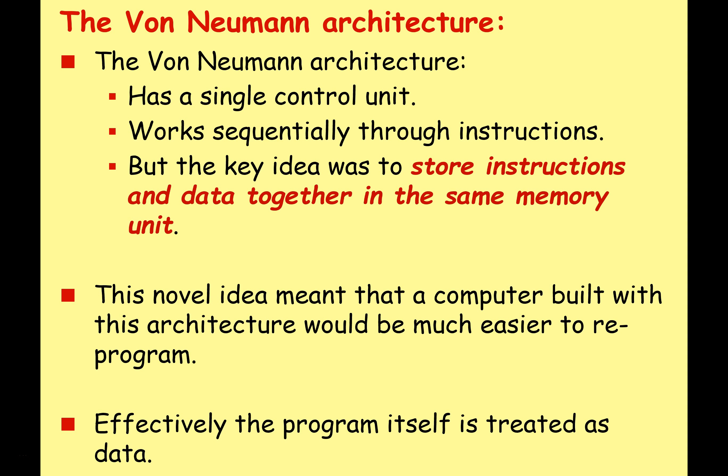The von Neumann architecture has various features — a single control unit and sequential instruction processing. But the key idea, the really big idea, is that it was all about storing instructions and data together in the same memory unit. Nowadays we take this for granted, because this is how computers are built, but this was his big idea. This novel idea meant that a computer built with this architecture would be much easier to reprogram. Effectively, the program itself is treated as data — both instructions and data are held in the same memory as binary data. You can just change what's loaded in to change the program, which is pretty much what we do today.